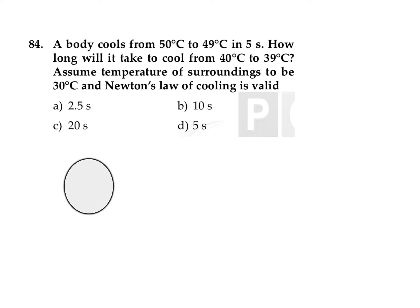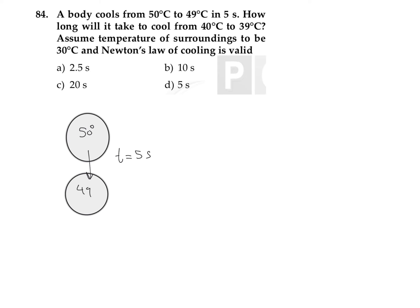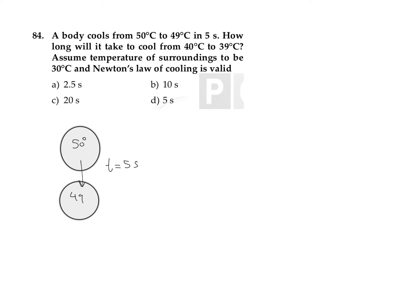In the first situation, the temperature of the object is changing from 50 degrees Celsius to 49 degrees Celsius, and this is happening in a time of 5 seconds. The difference in temperature is 1. Applying Newton's law of cooling: dT/dt is equal to a constant multiplied by the temperature of the object minus the temperature of the surrounding.